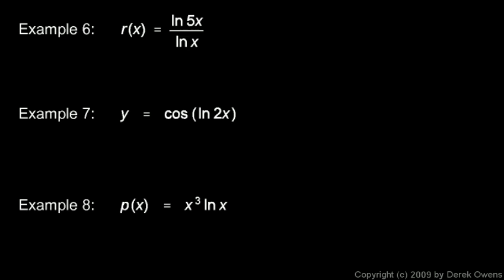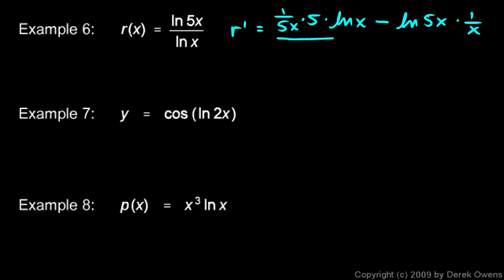Example 6: r(x) equals ln(5x) over ln(x) — use the quotient rule. r-prime equals the derivative of the numerator, which is 1 over 5x times 5 by the chain rule, times the denominator ln(x), minus the numerator ln(5x) times the derivative of the denominator which is 1 over x, all divided by the denominator squared, written as [ln(x)]².